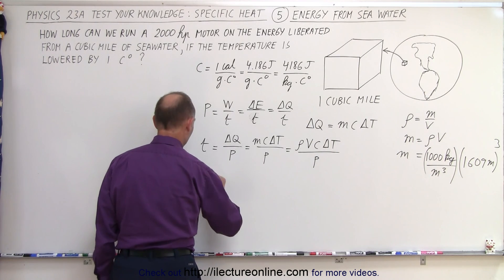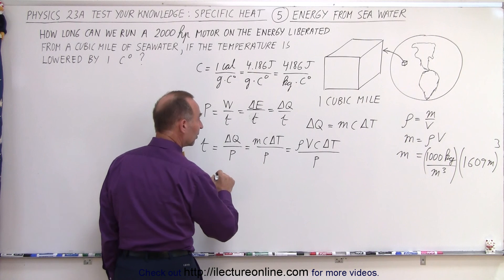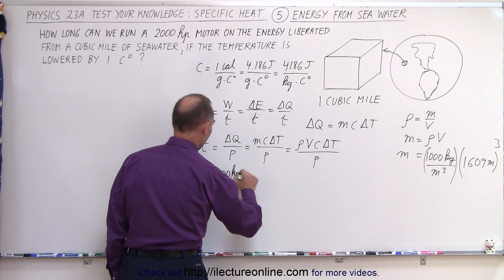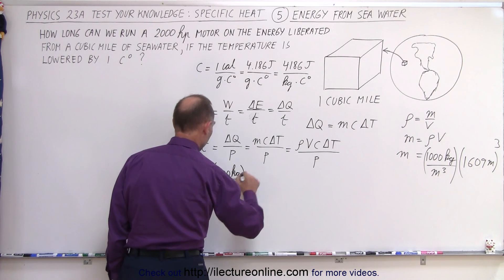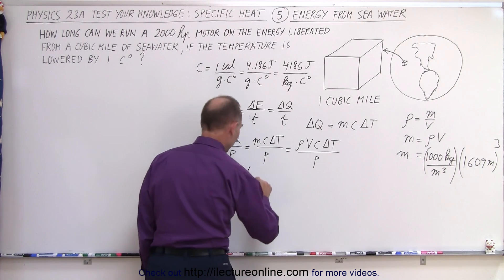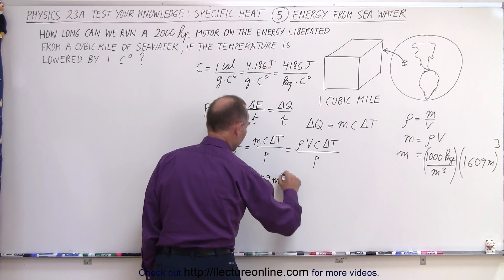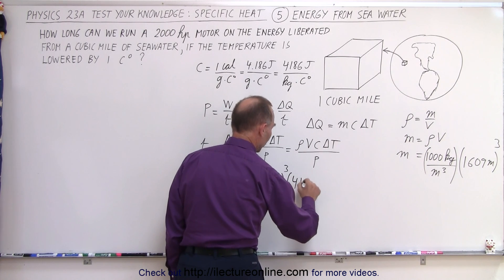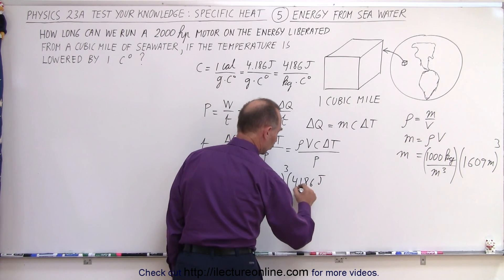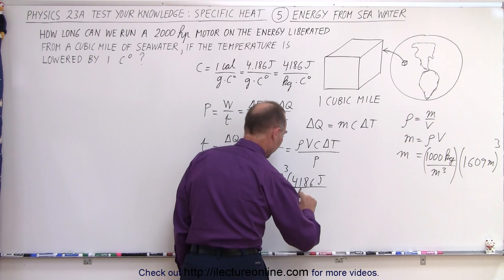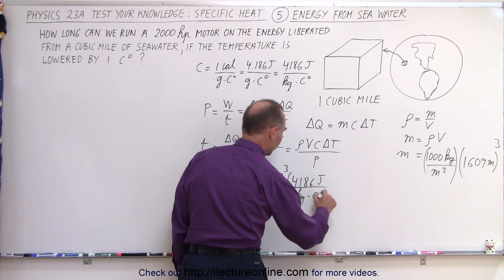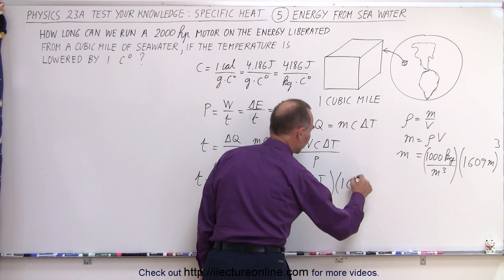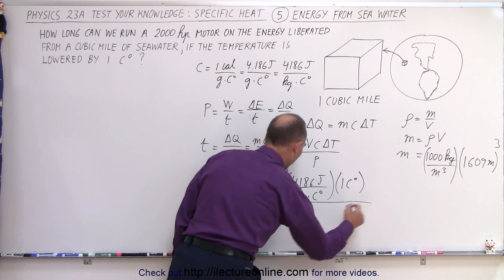Let's calculate the time. The time is equal to the density of seawater which is 1,000 kilogram per cubic meter. We multiply that times the volume which is 1,609 meters cubed. That would be the same as a cubic mile. The specific heat was 4,186 joules per kilogram per Celsius degree. And then the change in the temperature that would be 1 Celsius degree.